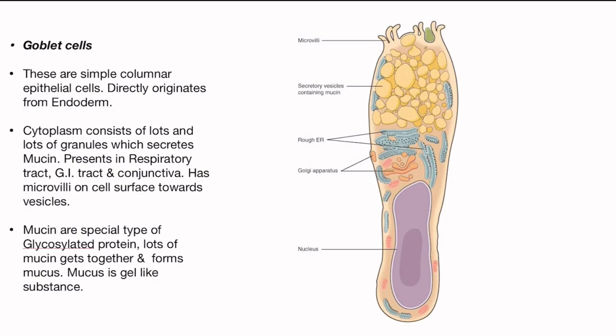Hello and welcome to this topic on goblet cells. These are simple columnar epithelial cells directly originating from endoderm. Aaj ka jo koshika hai, goblet koshika, sadharan columnar epithelial koshika hota hai jo endoderm se paida hota hai.